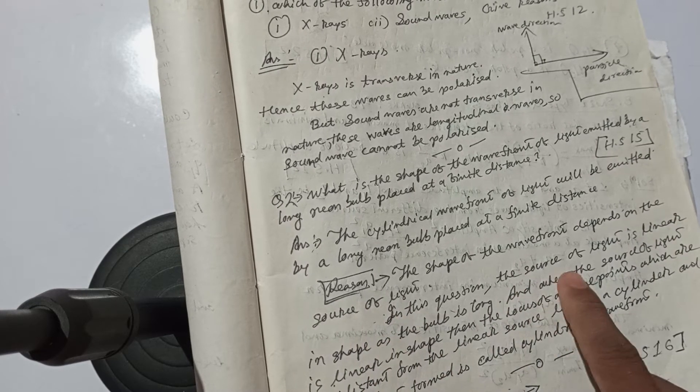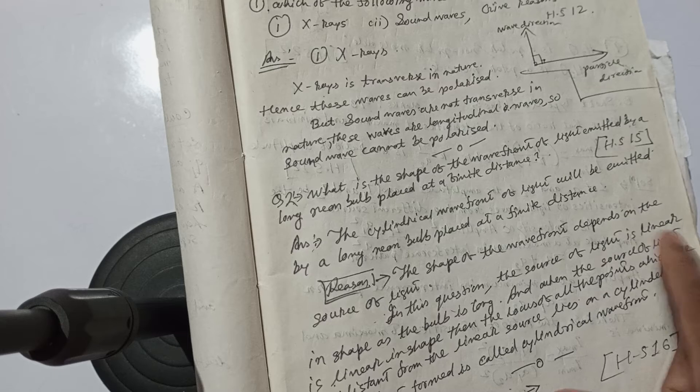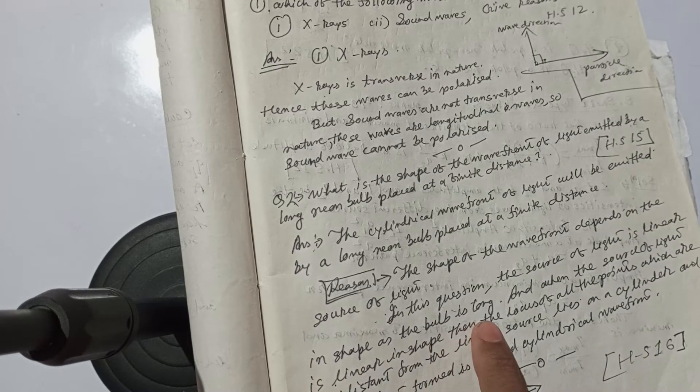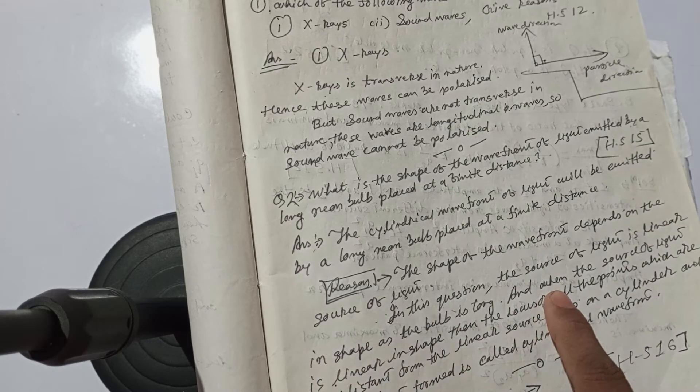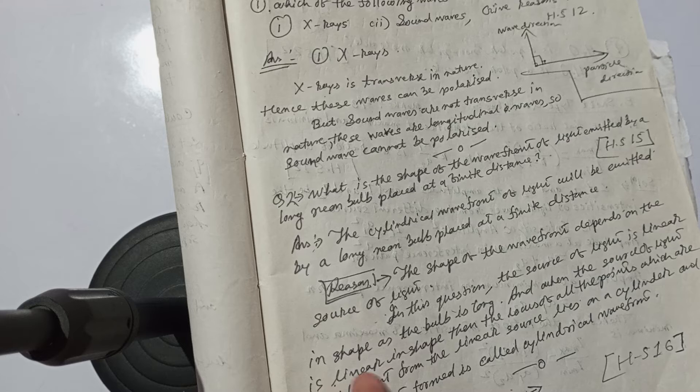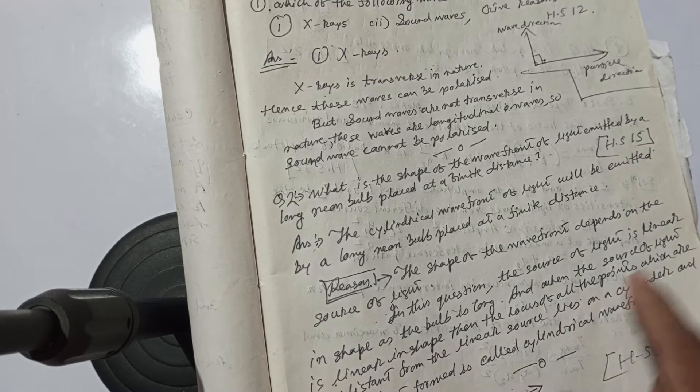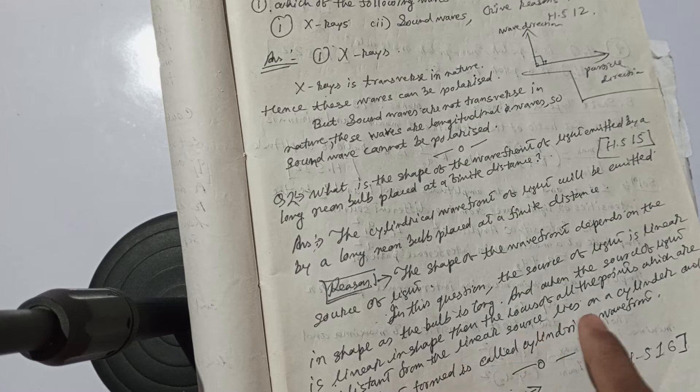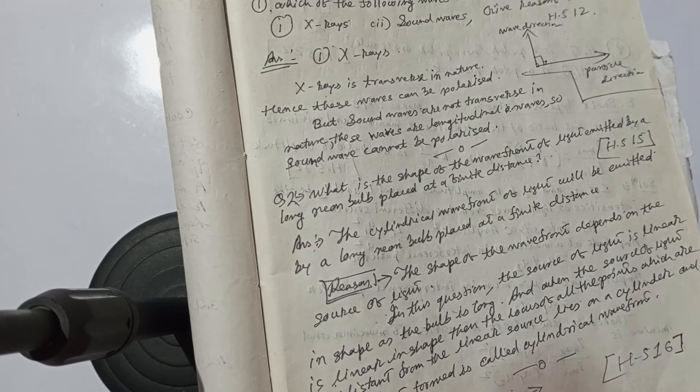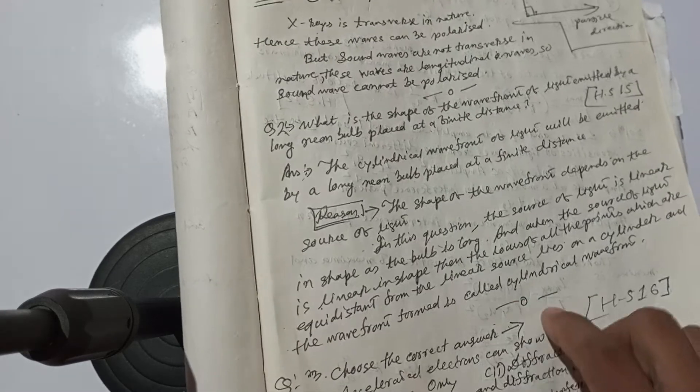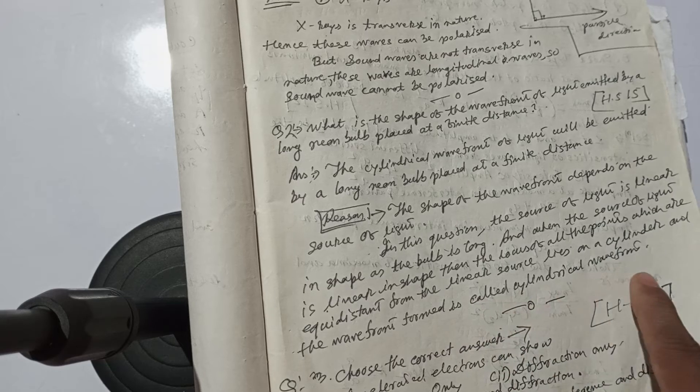In this question, the source of light is linear in shape as the bulb is long. And when the source of light is linear in shape, then the locus of all the points which are equidistant from the linear source lies on a cylinder. And the wave front is called cylindrical wave front.